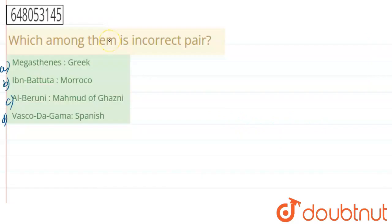Hello students, let's get started with our question. The question says: which among them is an incorrect pair? There are four pairs and we have to find out which one is incorrect.